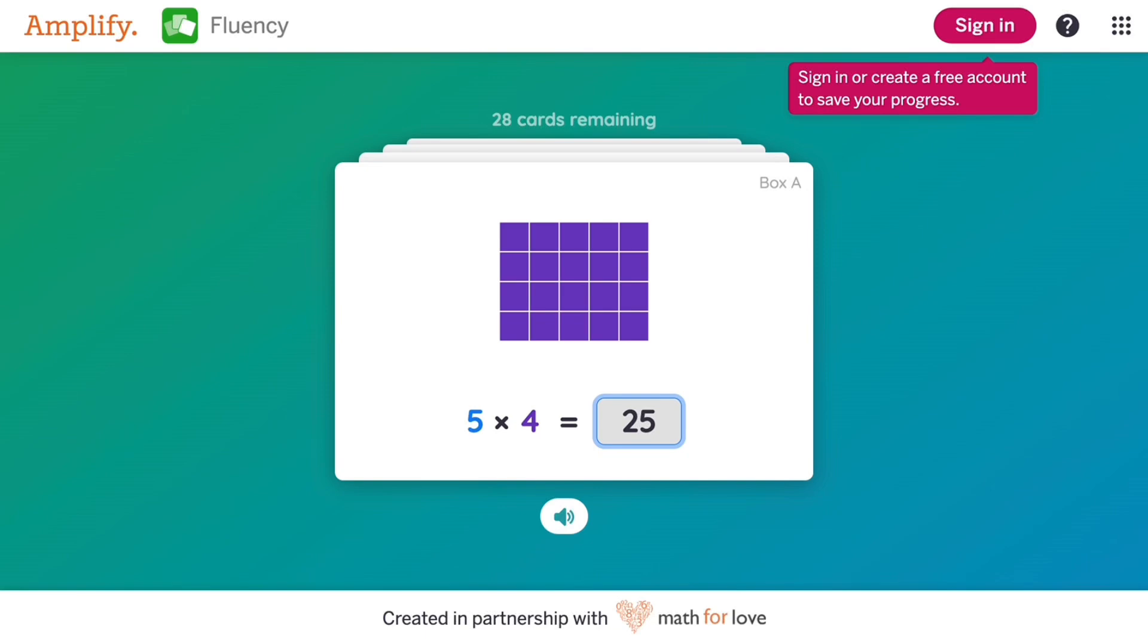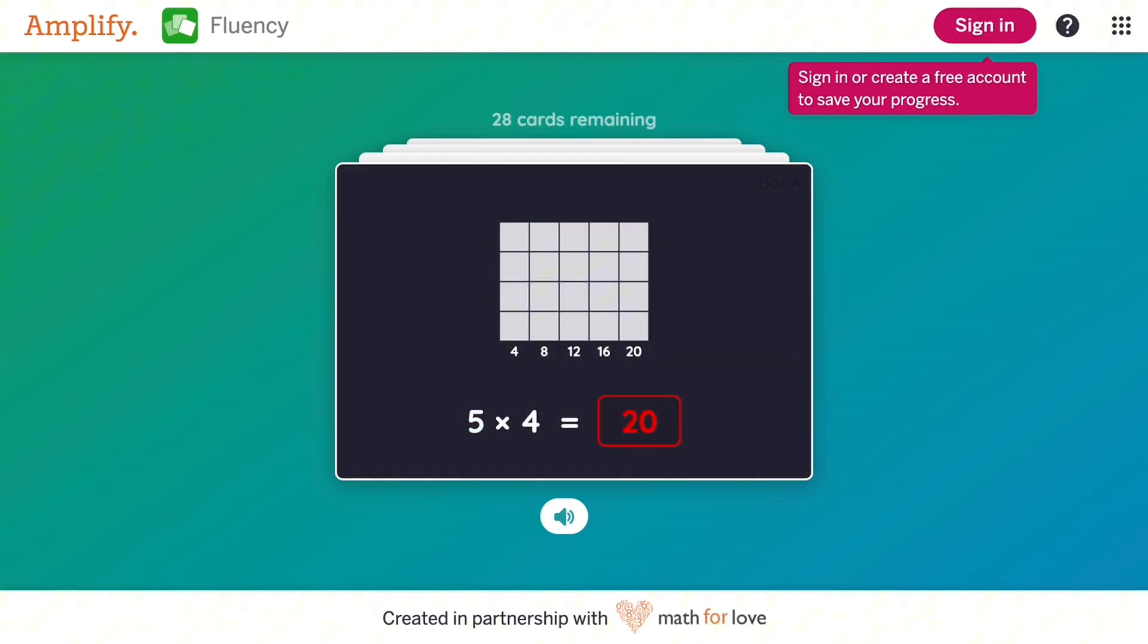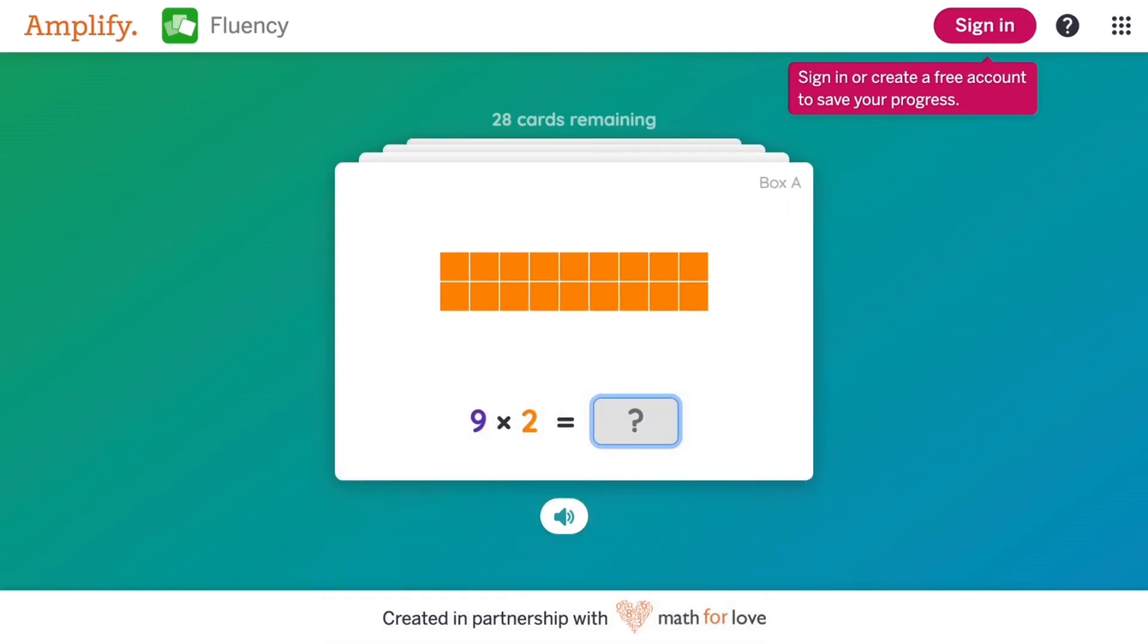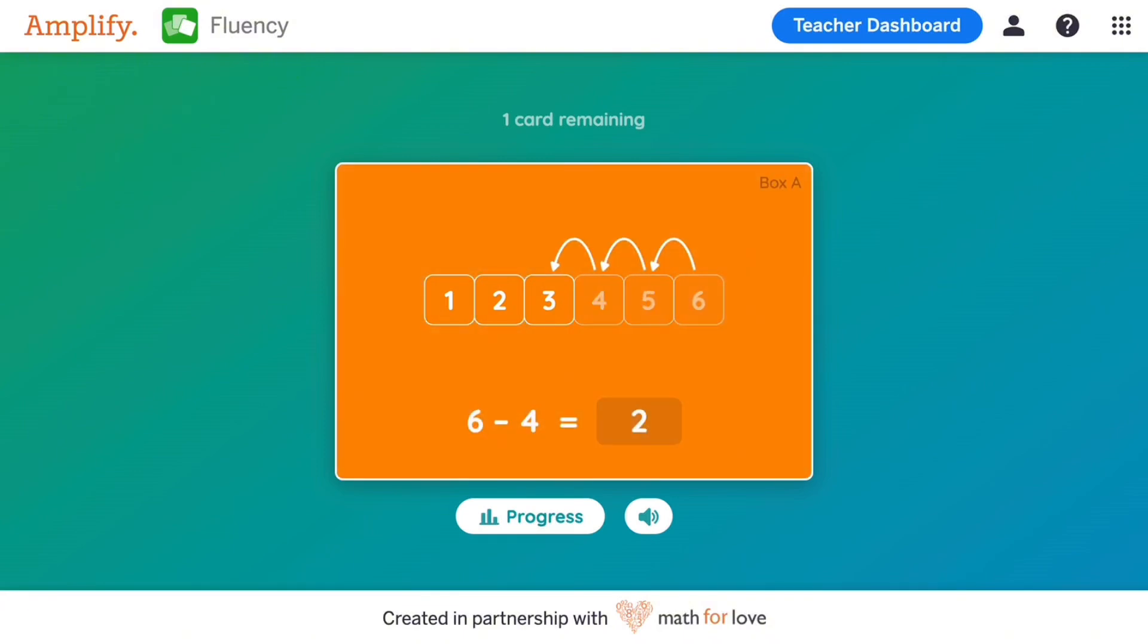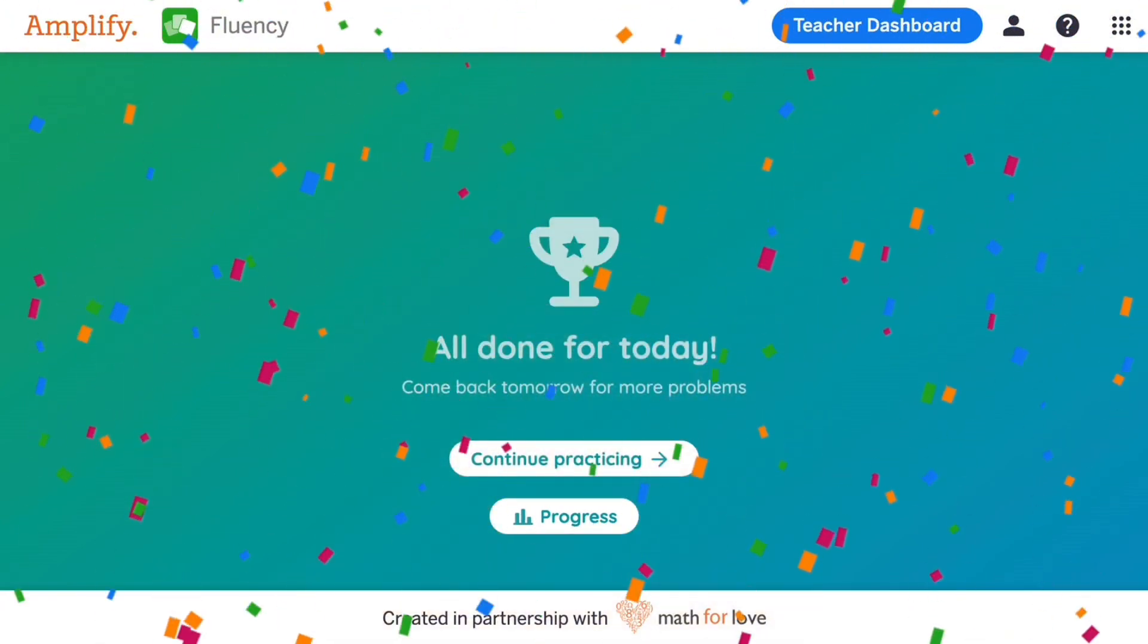If the answer is incorrect a second time, the correct answer is shown, and students move on to the next card. Once students have completed all of their cards for the day, confetti falls down the page.